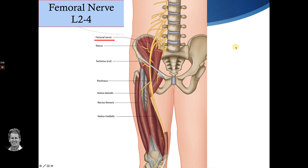The femoral nerve comes from the same area — a larger, thicker nerve from L2, L3, and L4. It actually splits into an anterior and posterior division, and supplies the iliacus, sartorius, pectineus, and then the vastus group: lateralis, medialis, intermedius, and the rectus femoris.